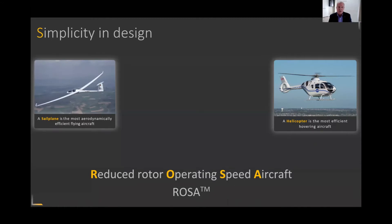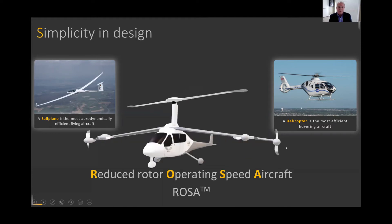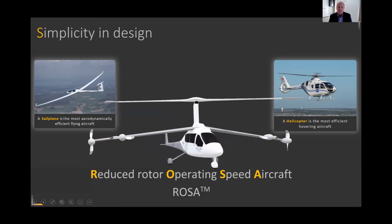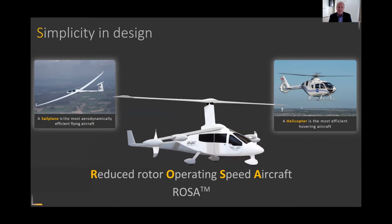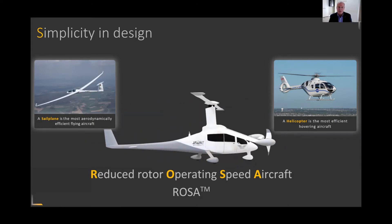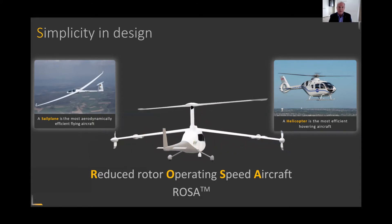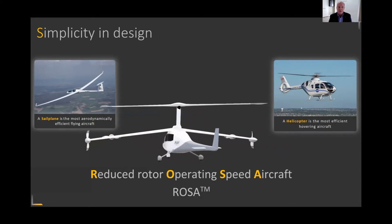We call this technology Reduced Rotor Operating Speed Aircraft, or ROSA. What you're seeing on this screen is that technology. It combines the features of a fixed-wing airplane and a rotary-wing airplane into a highly optimized and very efficient aircraft configuration.